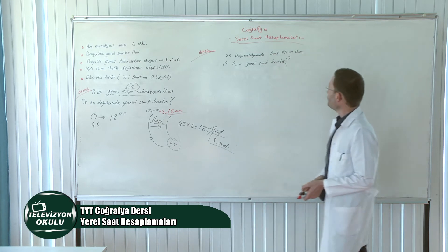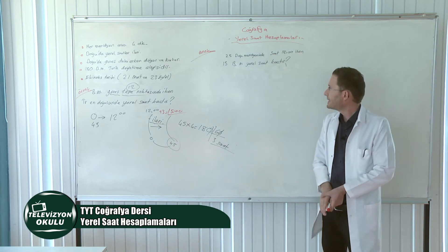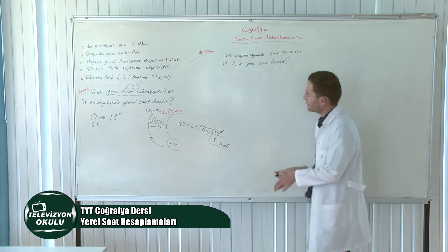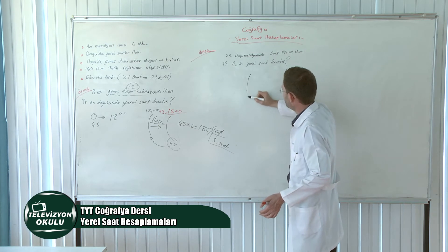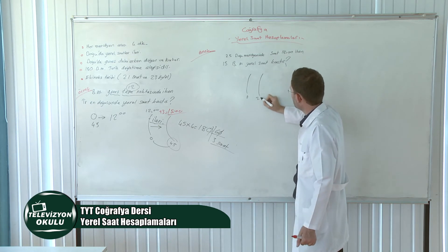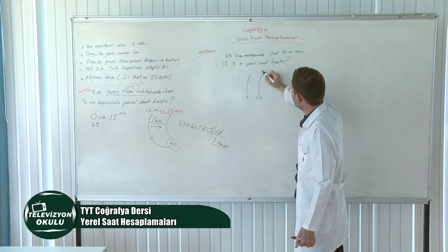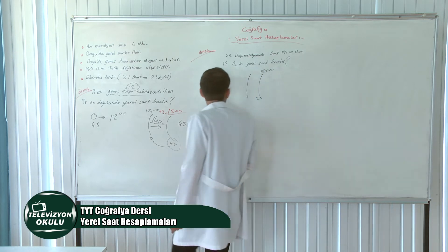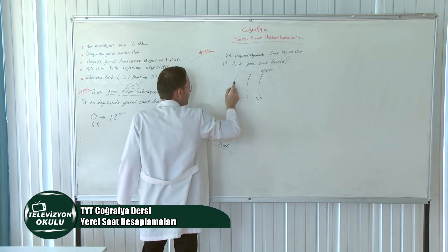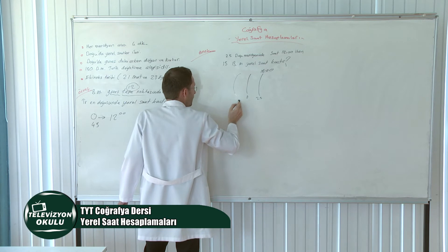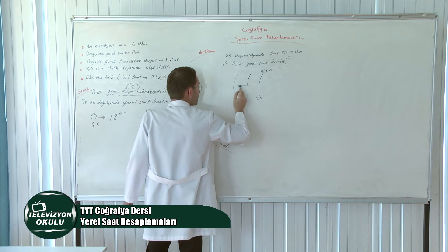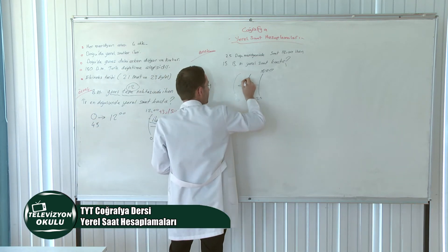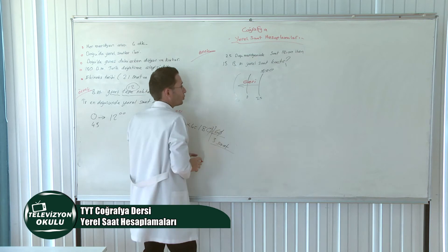25. Doğu meridyeninde saat 18.00 imiş, bizden 15. Batı meridyeni isteniyor. Batıya doğru gidiyoruz, bu yüzden yerel saat geri olacak. Aradaki meridyen farkını bulalım: biri doğuda biri batıda olduğu için toplayacağız. 25 artı 15 eşittir 40. Arada 40 boylam fark var. 40 çarpı 4 eşittir 160 dakika. Yerel saatimiz geri olacak.